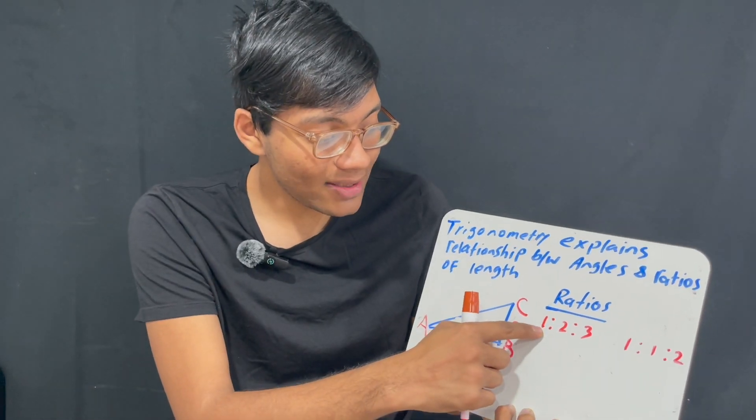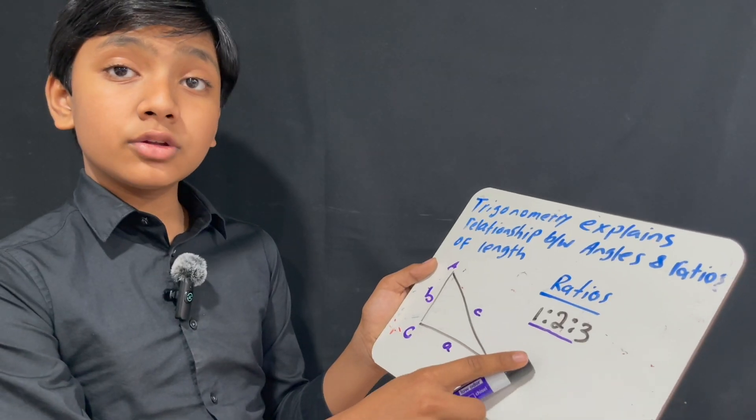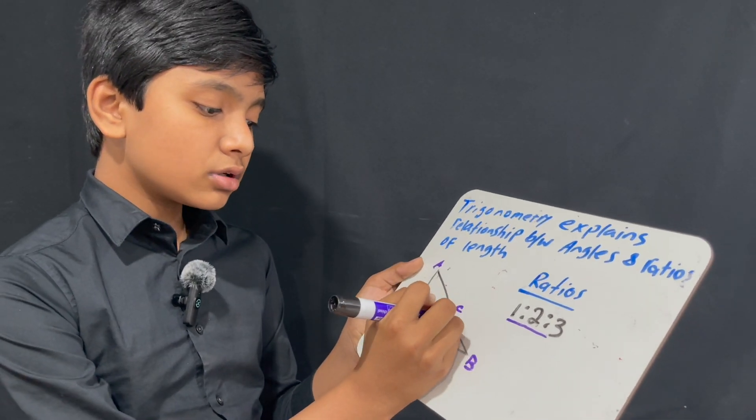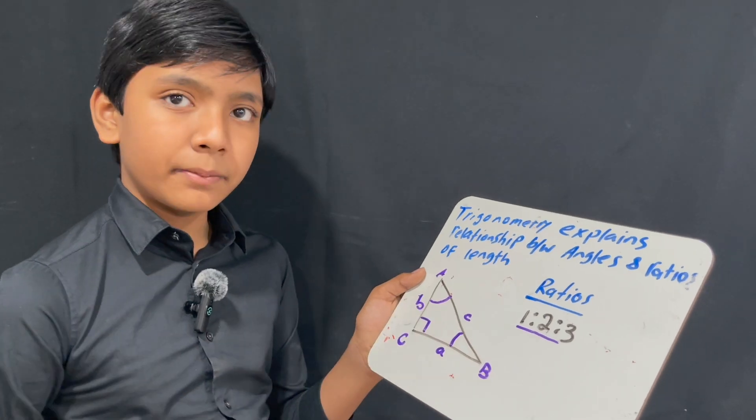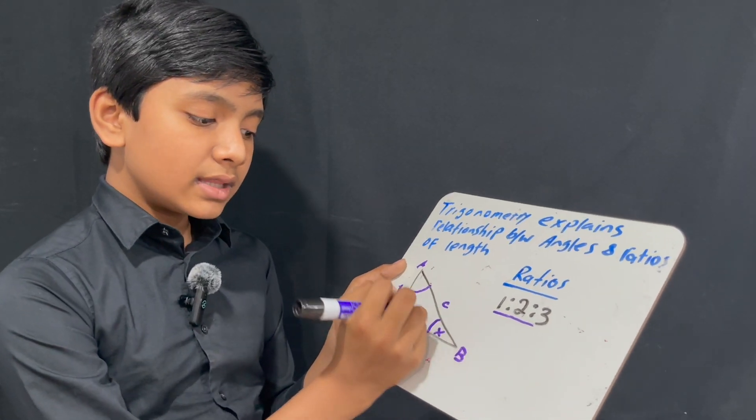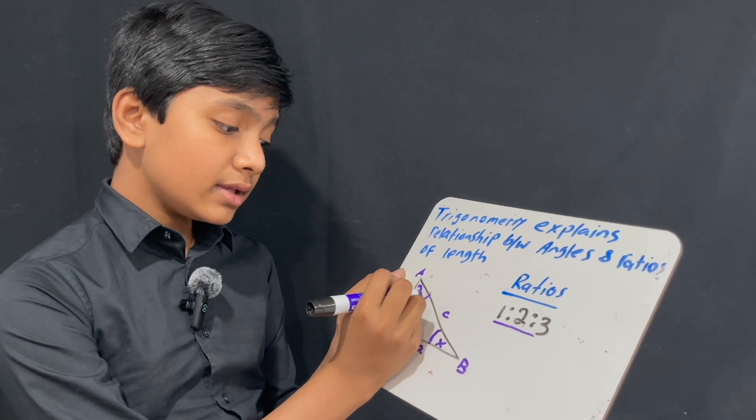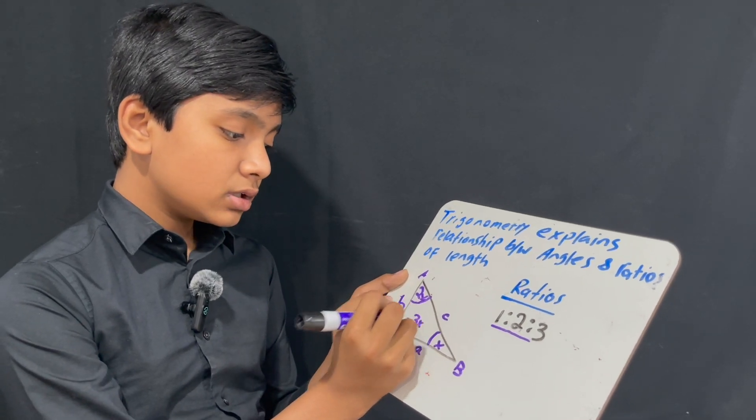First one is 1, 2, 3. So now 1 to 2 to 3. Now this looks like the smallest one, this looks slightly bigger, and this looks like the biggest. So I'll call this one x, this one 2x, and this one 3x.